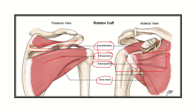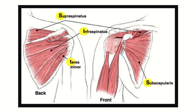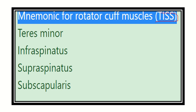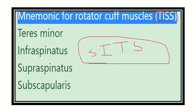An important mnemonic is SITS: S for supraspinatus, I for infraspinatus, T for teres minor, and S for subscapularis. In the second picture, we can also see the supraspinatus, infraspinatus, teres minor, and anteriorly the subscapularis. Another mnemonic is TISS — T for teres minor, I for infraspinatus, and the two S's for supraspinatus and subscapularis. You can remember either of these two mnemonics.